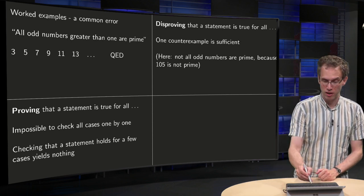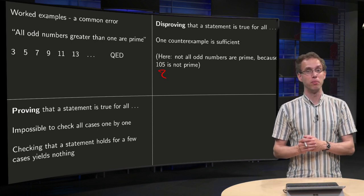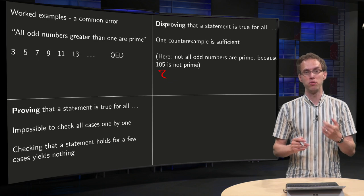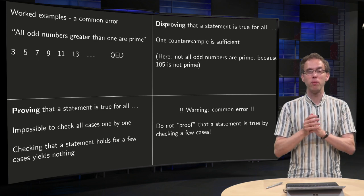So in this case our counterexample would be 105. It is an odd number but it is not prime, it equals 3 times 5 times 7. So a very general warning, a very common error.